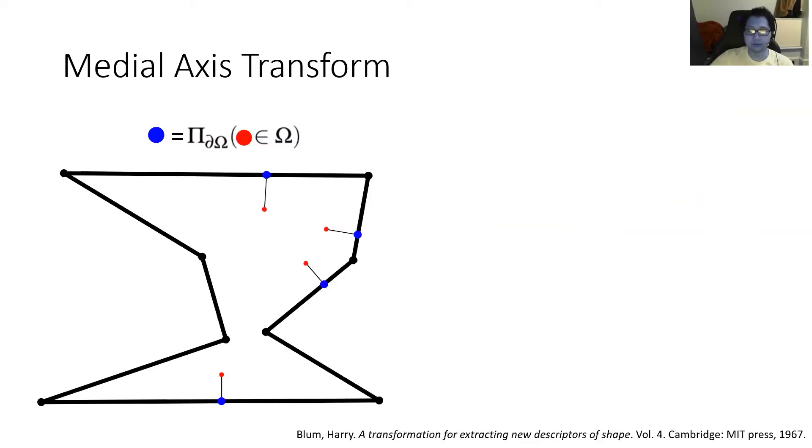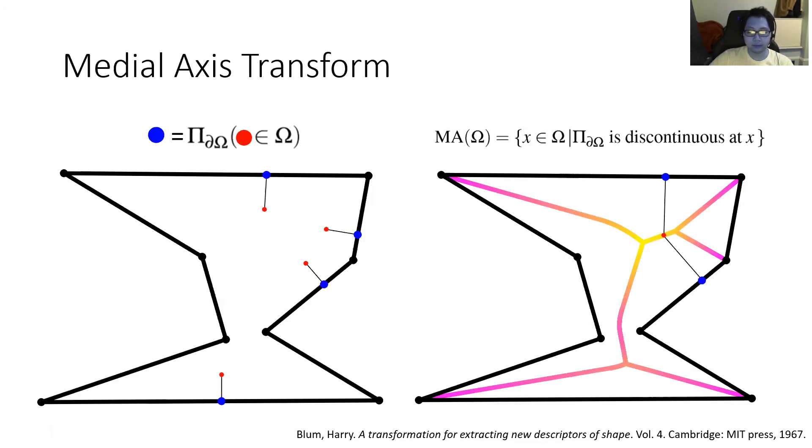To describe our algorithm, we'll need to first do a quick intro to the medial axis transform. Consider the projection operation that takes as input points on the interior of the domain, shown in red, and outputs the closest boundary point, shown in blue. The medial axis is then the set of interior points at which the projection is discontinuous. In other words, where there may be multiple closest boundary points. If you take all such points, it forms a one-dimensional skeleton, shown in purple and yellow. We say the radius function of a point on the medial axis is its distance to the boundary. The medial axis transform is the combination of the medial axis with its radius function.